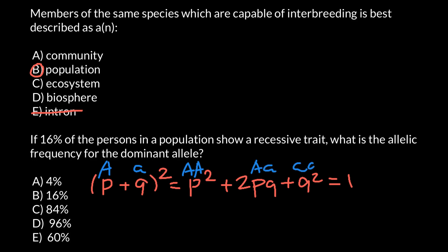Q squared stands for the homozygous recessive genotype. If we are told that the homozygous recessive genotype has a frequency of 16%.